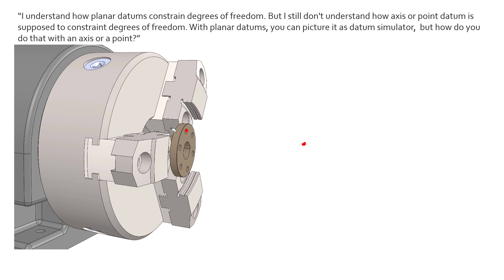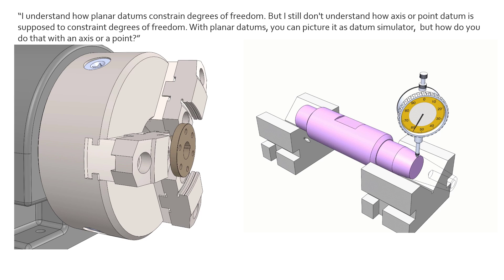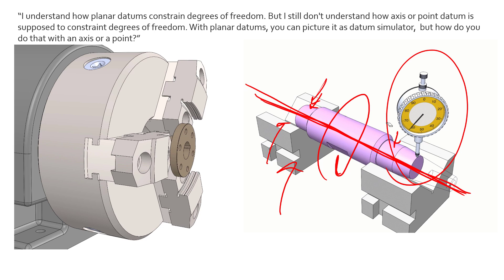One other method that we can show is using V-blocks. If we have two datum features here creating a single datum axis or a single axis of rotation, we can set those datum features in these V-blocks and rotate this part. The act of rotating that part will create an axis of rotation that we can then use as a datum simulator. Based off the geometry of our gauge blocks and the diameters measured here, we can understand where that axis of rotation occurs and we can do our inspections appropriately.